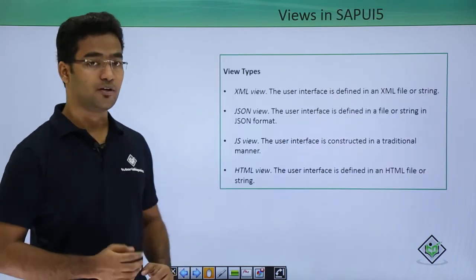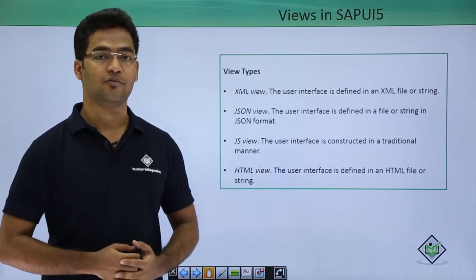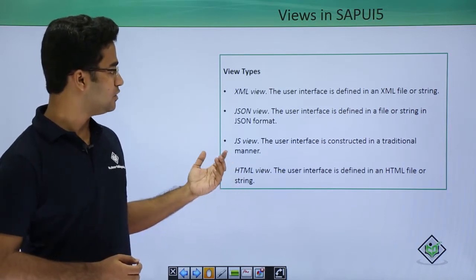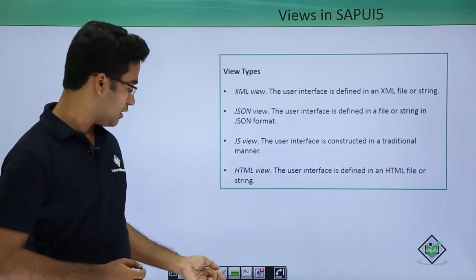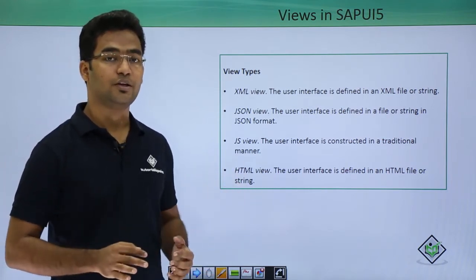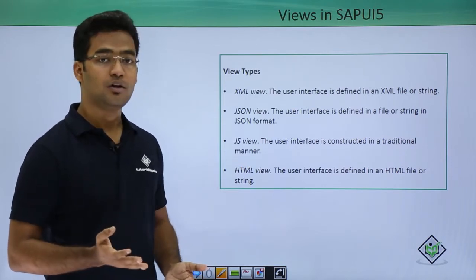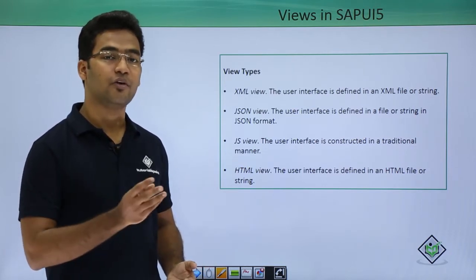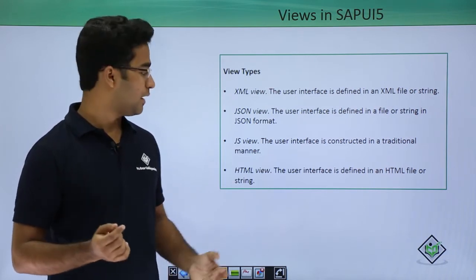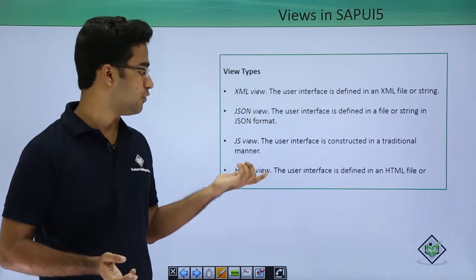Moving on to views — what are views? Views are used to define the UI of the application in SAPUI5 and there are mainly 4 types of views that we could create: XML, JSON, JS, and HTML. In the XML view we only define the UI, and in the JS view we also define the UI followed by the logic behind the UI. If we are defining a button, the logic behind the press of the button can also be described in the JS view itself, but in the XML view we cannot do this — we need a controller for that.